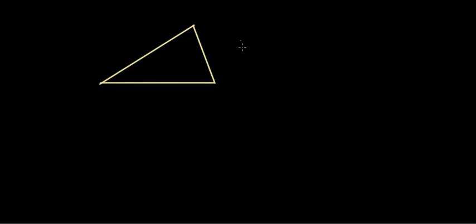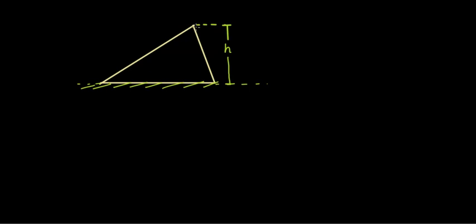Let us talk about altitudes of triangles. Altitudes of triangles is basically the height of the triangle. Imagine if any triangle is kept on a table and we measure the height of it — that is the length of the altitude. Since this is the height, it is perpendicular to the base of the triangle. An altitude is a perpendicular dropped from any vertex to the opposite side, and the angle it makes with that side is 90 degrees.